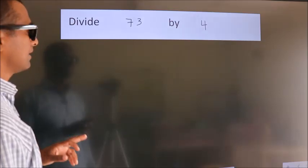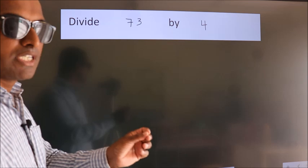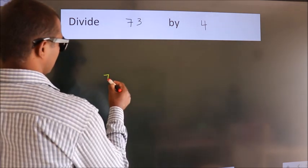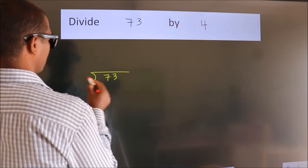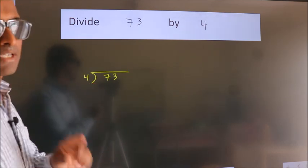Divide 73 by 4. To do this division, we should frame it this way: 73 here, 4 here. This is step 1.